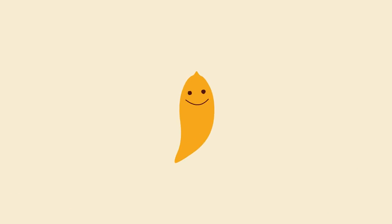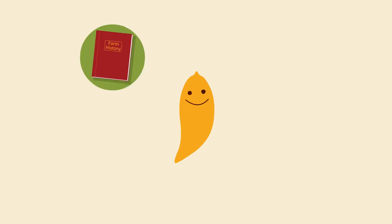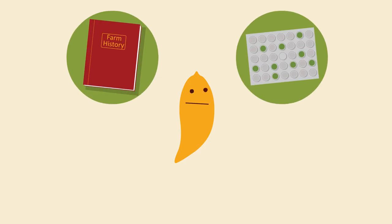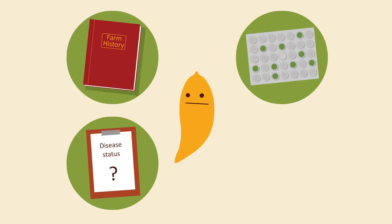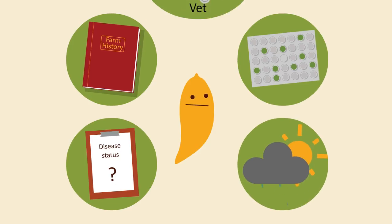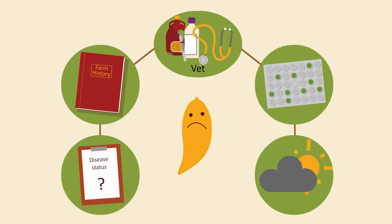Liver fluke control has become a year-round issue. Make the best use of all available information: farm fluke history, diagnostic test results, abattoir returns, and keep an eye on the weather. Always work with your vet or animal health advisor to come up with a fluke control plan tailored to your farm, because every farm is different.